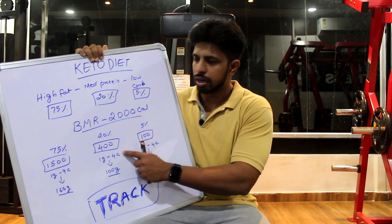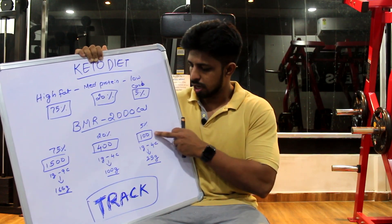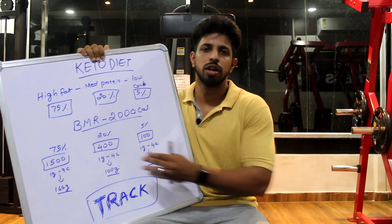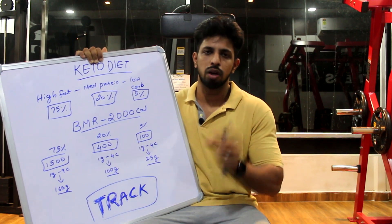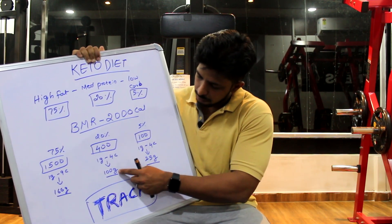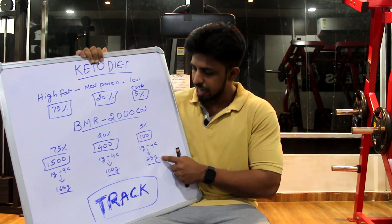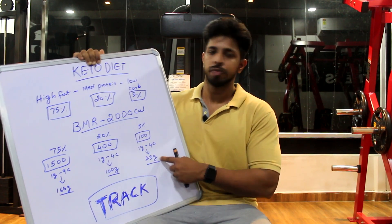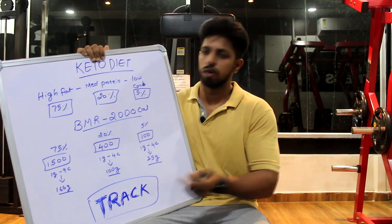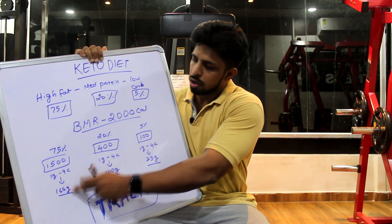Carbs and protein — 1 gram is 4 calories. Which means if you divide 400 calories by 4, you will get the amount in grams. So protein is 100 grams and carbs is 25 grams. For fat, 1 gram is 9 calories, so if you divide by 9, we will get the amount in grams.